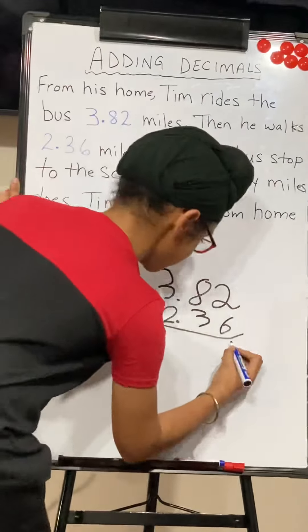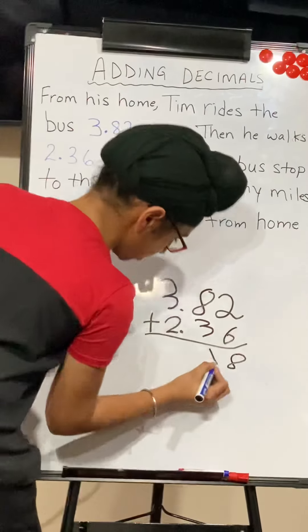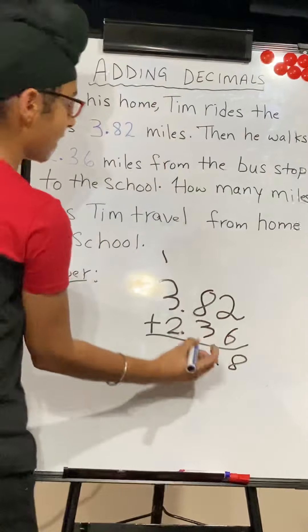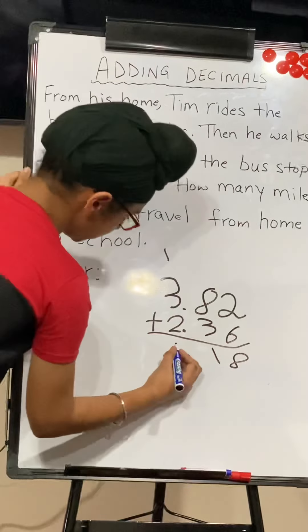So let's add the hundredth place. 2 plus 6 equals 8. 8 plus 3 equals 11. Put the one there, regroup the other one there. Remember the decimal. 2 plus 3 equals 5 plus the regrouped 1 equals 6.